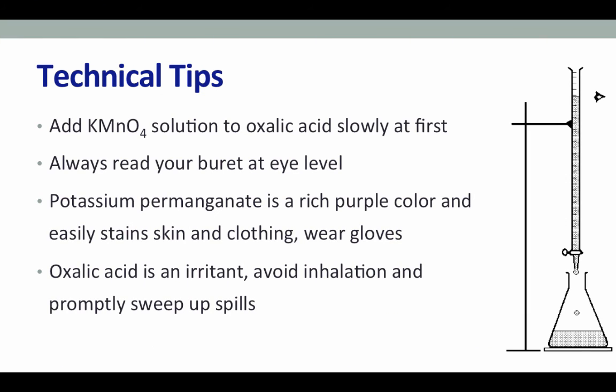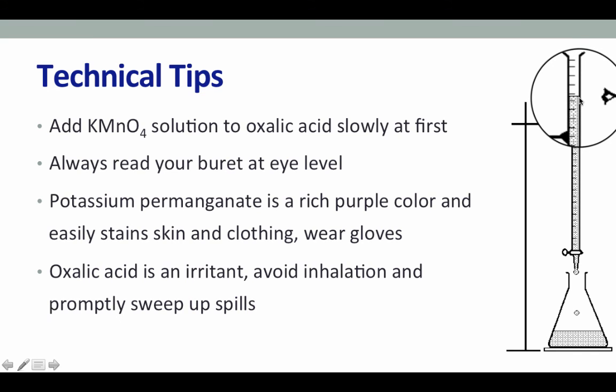With this specific redox reaction, it's important to add the potassium permanganate solution only very slowly at the beginning of your titration — this pertains to the first 3 to 5 mL. If you add the permanganate solution too quickly at the beginning, you will end up forming manganese oxide, a brown solid that will precipitate and ruin your titration. It's also important to always read the level of your burette with your eye at the level of the liquid. Potassium permanganate is a rich purple color and easily stains skin and clothing, so wear gloves and button up your lab coat. Oxalic acid is an irritant, so avoid breathing any of its dust and promptly clean up any spills.